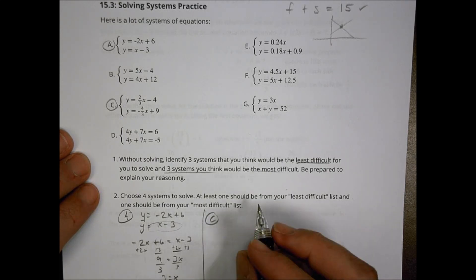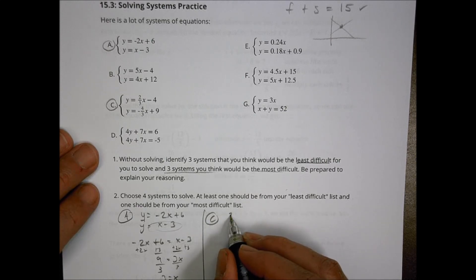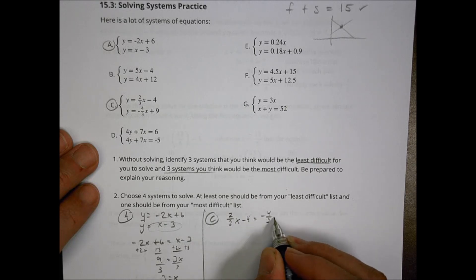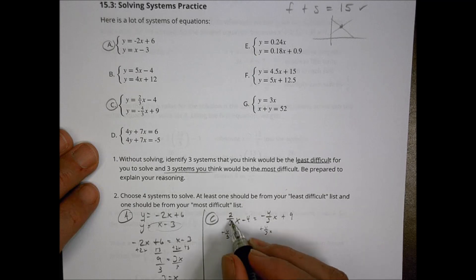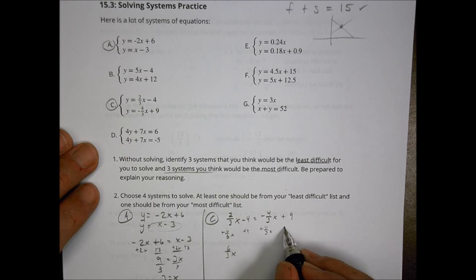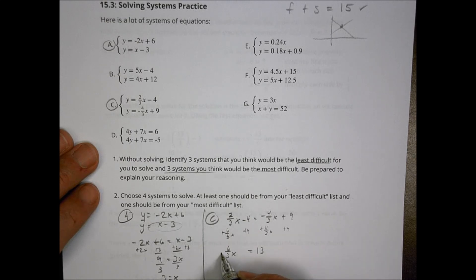For letter C, this one I chose because it has some fractions. We have 2 thirds X minus 4 equals negative 4 thirds X plus 9. We can add 4 thirds X to both sides. So common denominator, 2 plus 4 is 6, so I have 6 thirds X over here. Add 4, add 4, equals 13. Actually I can first reduce that. 6 divided by 3 is 2, so that's 2X equals 13. Divide both sides by 2, and X equals 13 over 2.